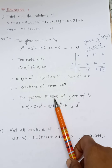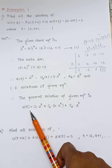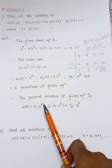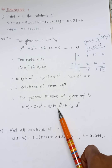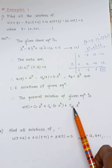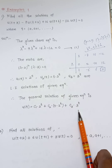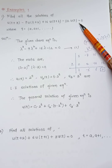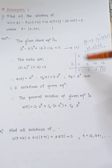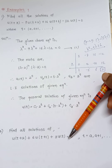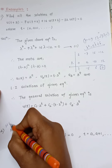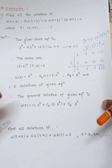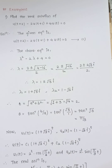These are the linearly independent solutions of the given equation. The general solution is: u(t) = c₁·2^t + c₂·t·2^t + c₃·3^t. These are the solutions of this given equation. This concludes the first example of linear difference equations.